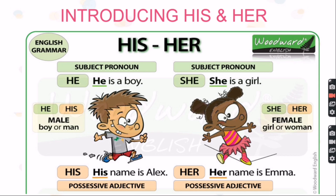His comes from the subject pronoun 'he'. He is a boy. 'He' and 'his' is for male — boy or man. 'His' is actually a possessive adjective, meaning it belongs to him. For example, his name is Alex — 'his' means his name belongs to him.